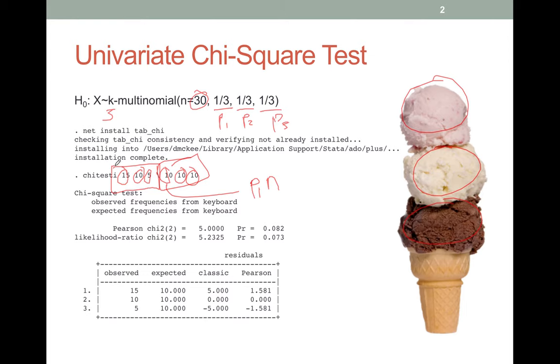Luckily Nick Cox has created a package called tab chi that does include a command for this, and all you need to do is say net install tab chi and you'll get that package loaded up. That comes with a few different commands including chi tests.